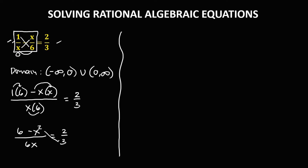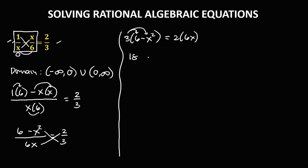Applying cross multiplication, we have 3 times 6 and 3 times negative x squared on the left side. This gives us 18 minus 3x squared, equals 2 times 6x, which is 12x.